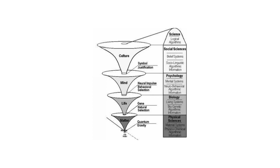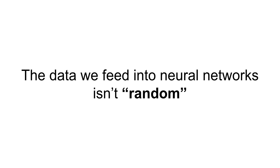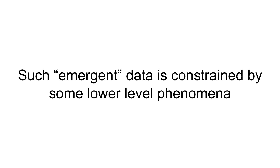For example, what happens in culture is a result of mind; what happens in mind is a result of evolution; and evolution is really a result of what happened in the universe as earth got formed and chemicals came together to kickstart it. So there is this deepness in explanations and deepness in data that we see in the real world. Because of this deepness of phenomena, the data we ultimately feed into neural networks isn't random in the mathematical sense.